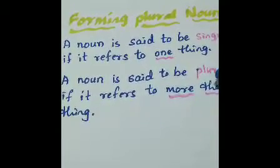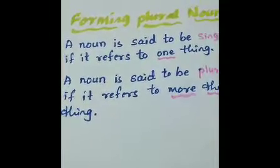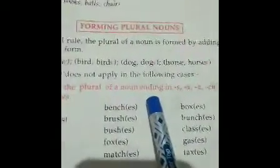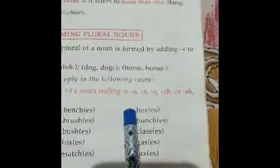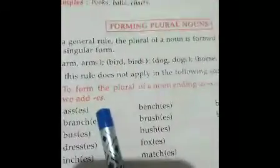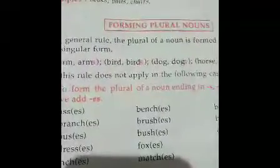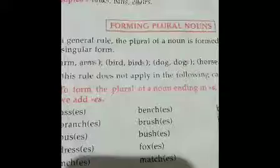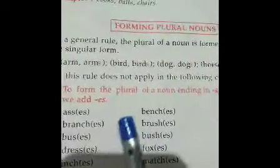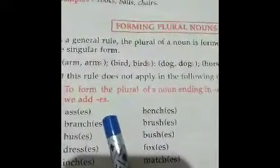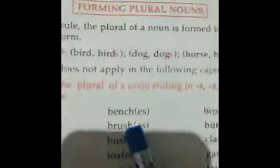Today we see the rules one by one. First rule: to form the plural of a noun ending in S, X, Z, CH, or SH, we add ES.